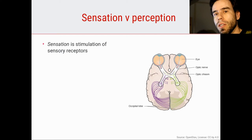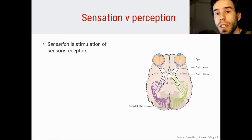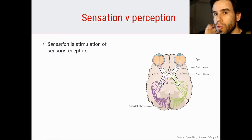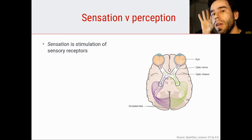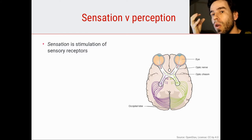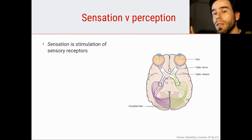What is sensation? Sensation is stimulation of sensory receptors. For example, to see, light falls through the lens in my eye onto the retina in the back of my eye, where there are photoreceptors — neurons, sensory cells that respond to light. This is sensation.